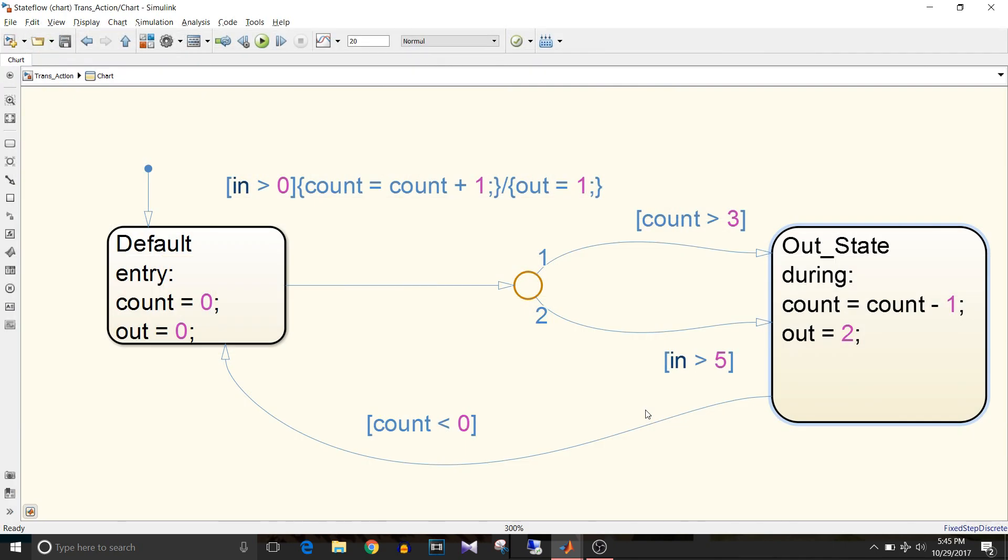Now you know the difference between state action, condition action, and transition action: state action for state being active, condition action for condition being true, and transition action for completing the transition from one state to another.